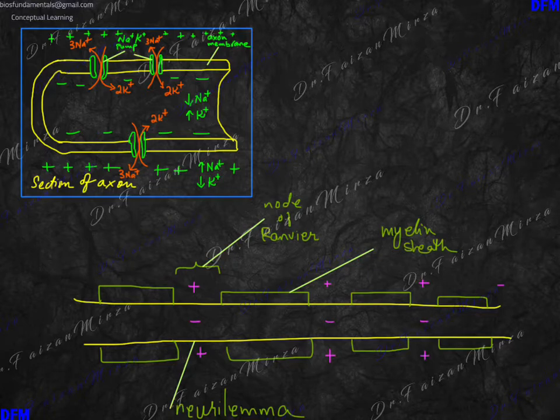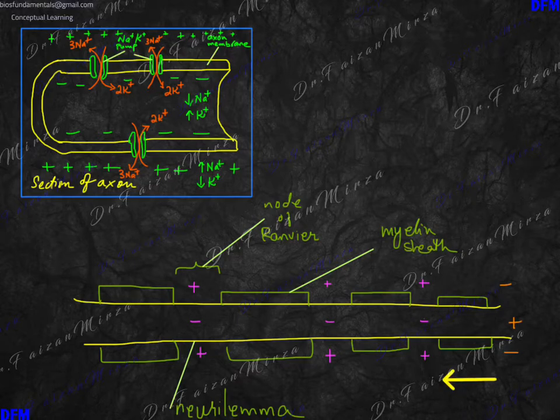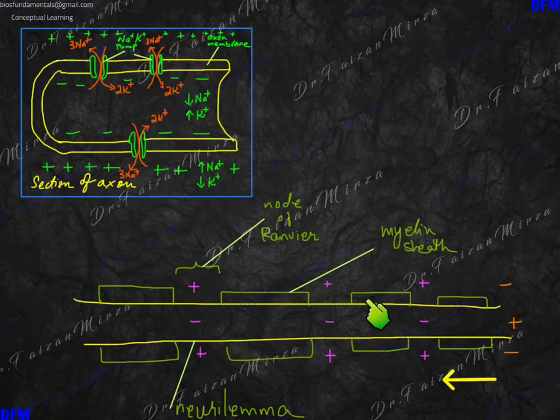So we know that myelin sheath speeds up the neural communication. So what exactly is happening? This is neurilemma, the membrane called neurilemma. So what happens here? Only the nodes of Ranvier undergo depolarization and repolarization. The region which is covered with the myelin sheath or with the Schwann cell doesn't allow any ion exchanges to occur.